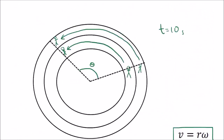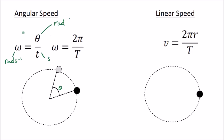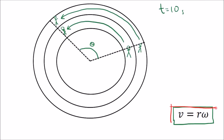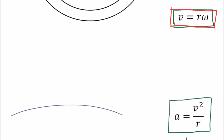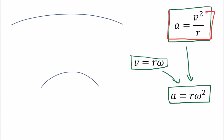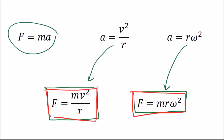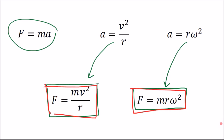To summarize the equations: we have two equations for angular speed, an equation for linear speed, and the relationship between linear speed and angular speed v = rω. We also have a couple of equations for acceleration and two equations based on F = ma for the centripetal force. We need to be able to apply these equations to particular examples of circular motion.